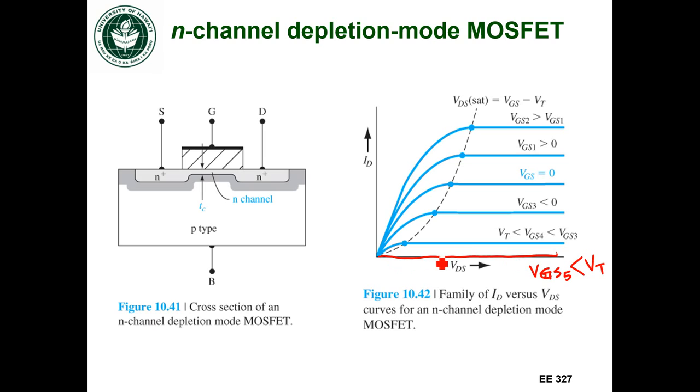Then I can completely turn off the current going through this transistor. But same kind of thing, the family of curves looks the same.